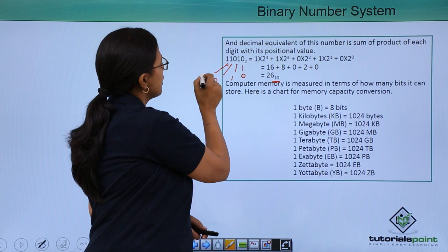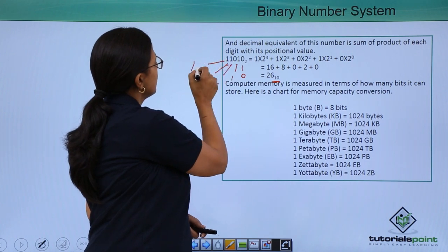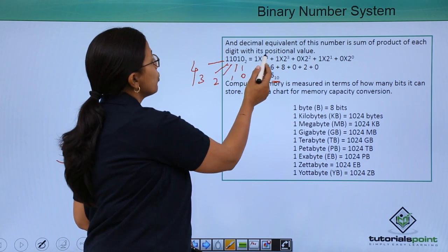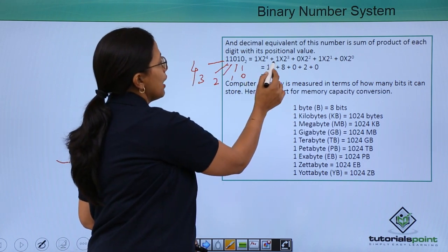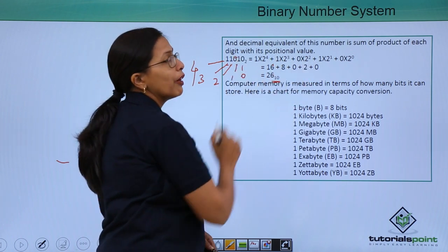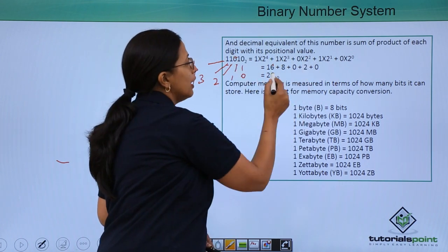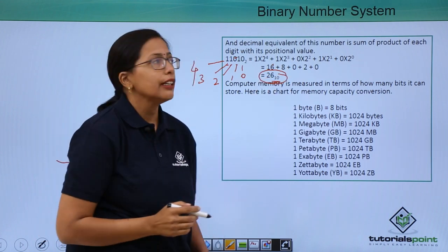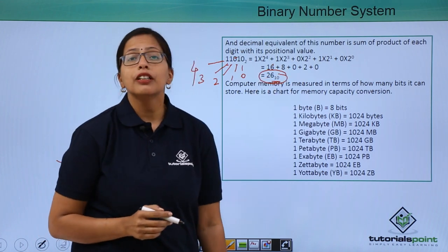So, what I will do here is 1 times 2 to the power of 4 plus 1 times 2 to the power of 3 plus 0 times 2 to the power of 2. This way, I will calculate and I get 26 to the base of 10. This is the decimal number that I get.